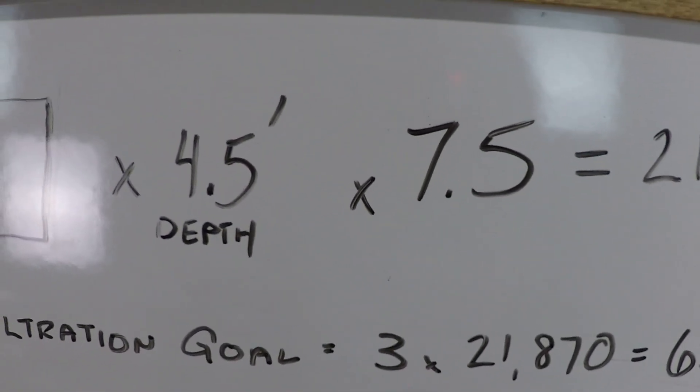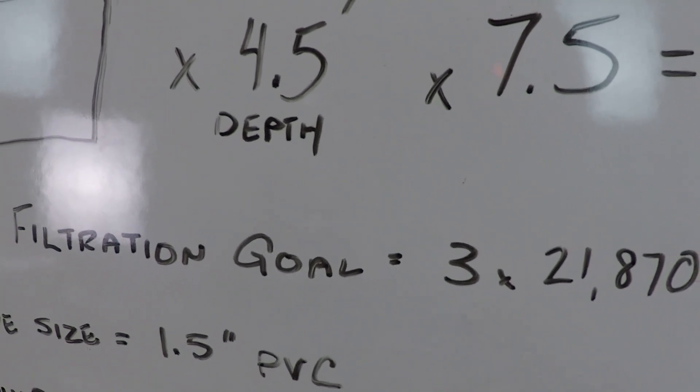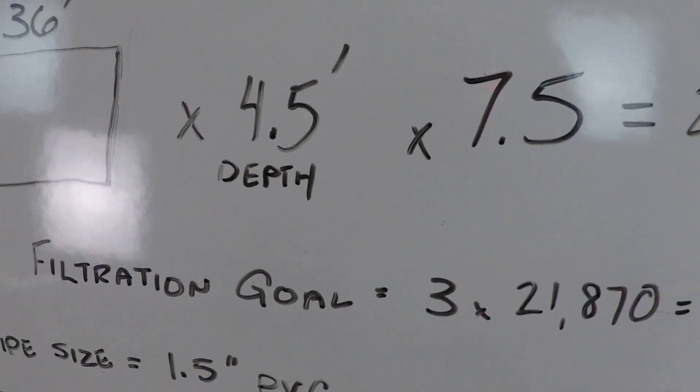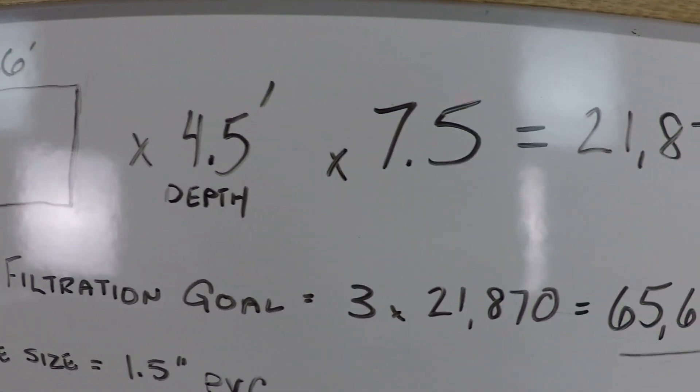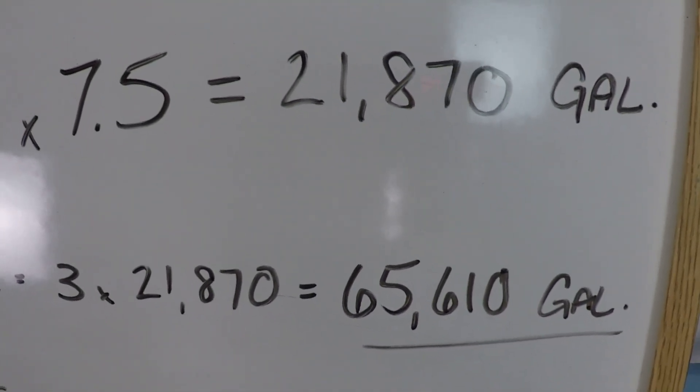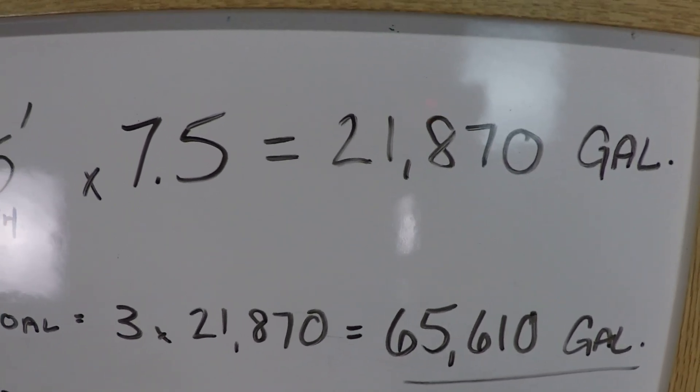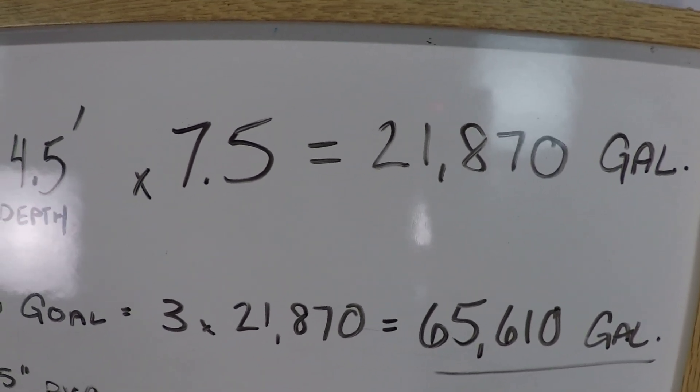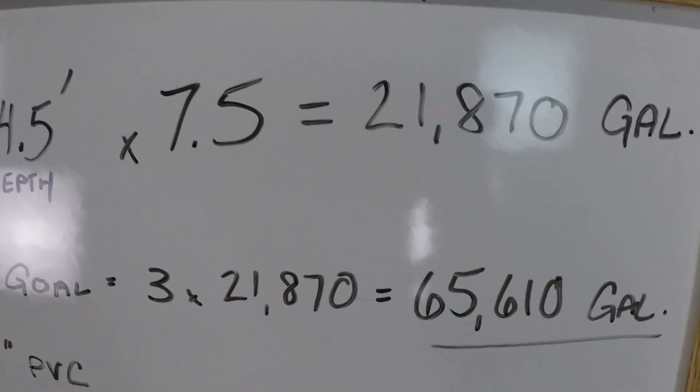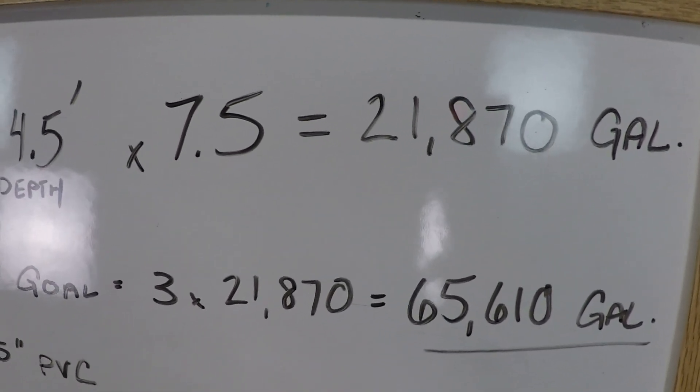The math is that you need to filter the volume of your pool three times to achieve at least 95% of all the water being filtered at least once. That's why our goal is 65,610 gallons - you want to filter all the water to remove contaminants and organic debris. Anything you don't filter, the chlorine in your water needs to deal with chemically.